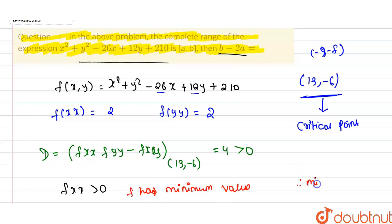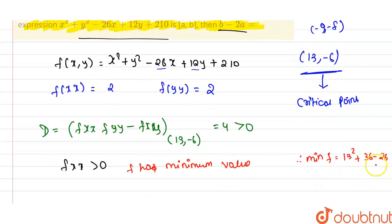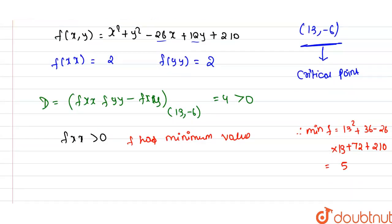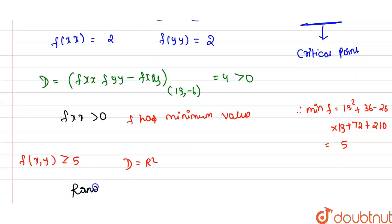Therefore, the minimum of f = 13² + 36 - 26(13) + 72 + 210 = 5. So f(x, y) ≥ 5, meaning the range of the function is [5, ∞).